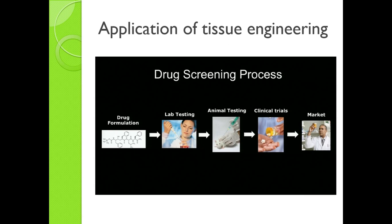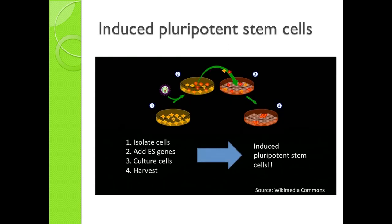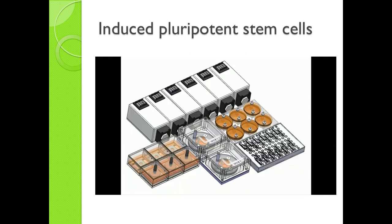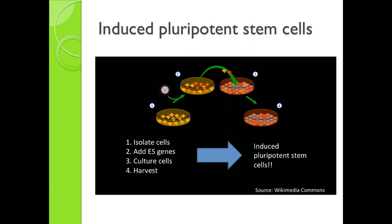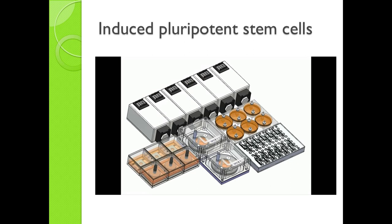Application of tissue engineering solved this problem. Its name is induced pluripotent stem cell, developed in Japan recently. By adding a few genes to skin cells and culturing them, we can harvest them. This cell has two advantages. First, it doesn't have any ethical problem. Second, using this cell we can make any organ like liver, heart, and brain. This picture shows a bioreactor which makes induced pluripotent stem cells — this device can produce these stem cells more systematically.